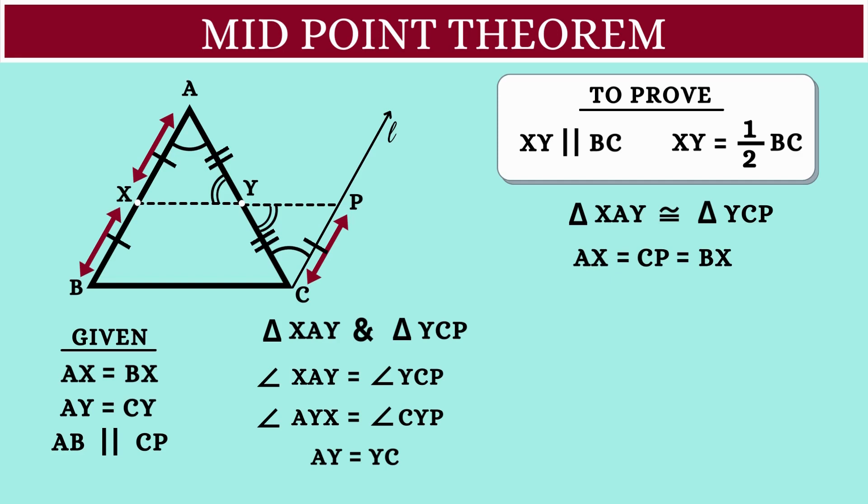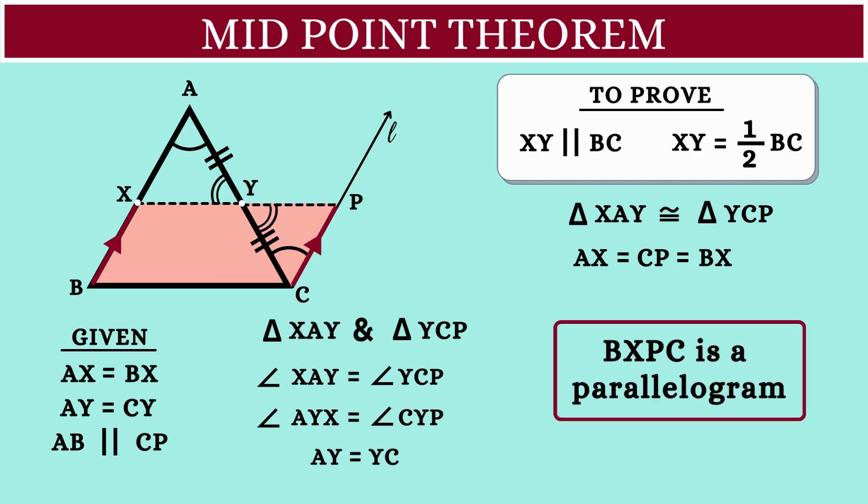So we can say, in the quadrilateral BXPC, the sides BX and CP are of equal length and they are parallel to each other, which means the given quadrilateral is a parallelogram.